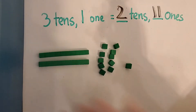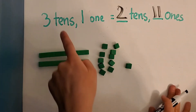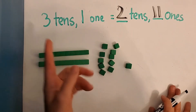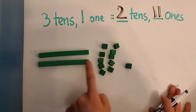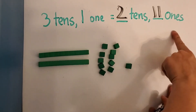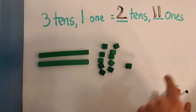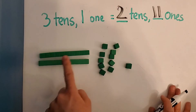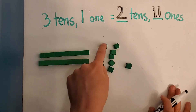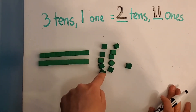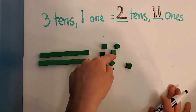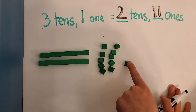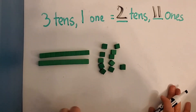So three tens and one one is equal to two tens and eleven ones. We can double check. Three tens, one one equals what number? Thirty-one, right? Now let's check two tens and eleven ones. We have two tens: ten, twenty. Then twenty-one, twenty-two, twenty-three, twenty-four, twenty-five, twenty-six, twenty-seven, twenty-eight, twenty-nine, thirty, thirty-one. Very good, boys and girls. Excellent.